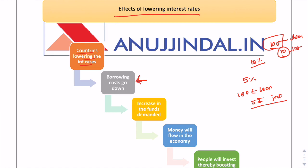So borrowing cost going down increases the funds demanded — more and more people will take up loans, the demand for loanable funds goes up, money flows into the economy, people invest, thereby boosting growth and enhancing economic activity. This is the reason why countries are lowering their interest rates.